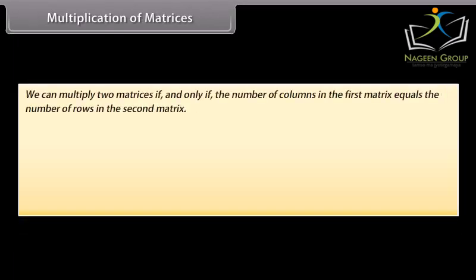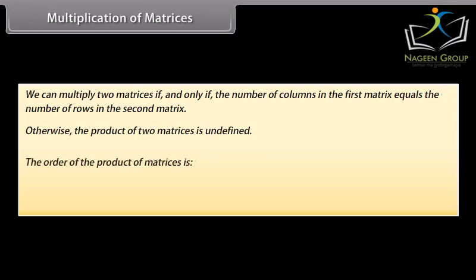We can multiply two matrices if and only if the number of columns in the first matrix equals the number of rows in the second matrix. Otherwise, the product of two matrices is undefined. The order of the product matrix is: rows of the first matrix by columns of the second matrix.